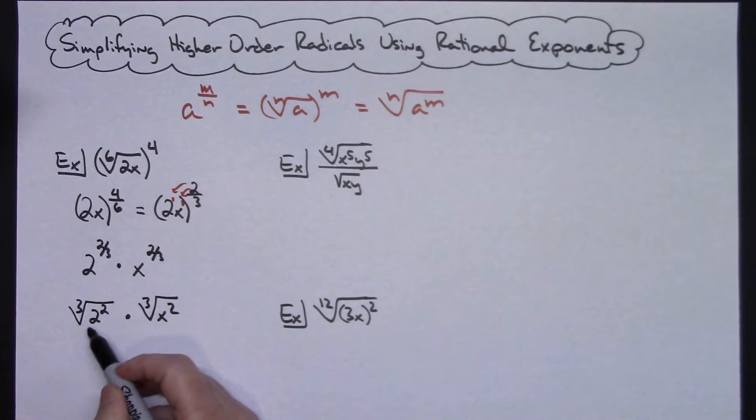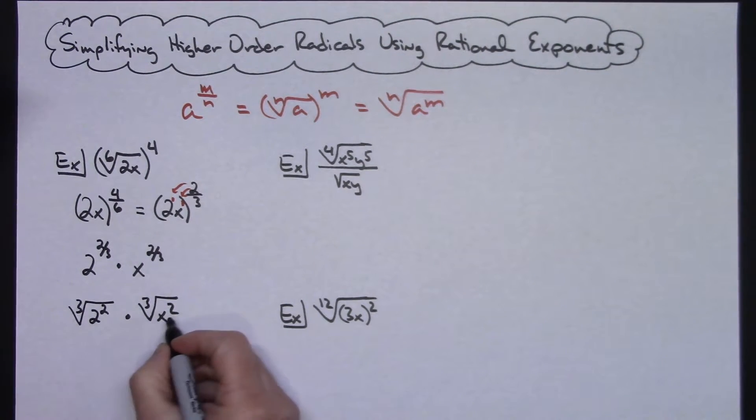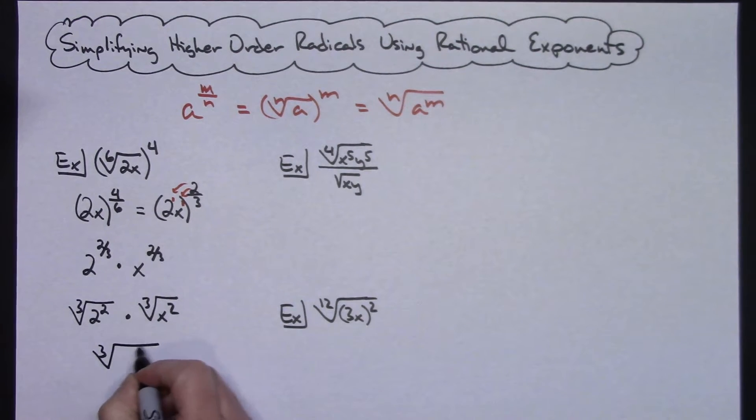The only thing that I could be left to do here would be to multiply that out. 2 squared is going to give me 4. And then I can't do anything with this one, so I could have the cube root of 4x squared.